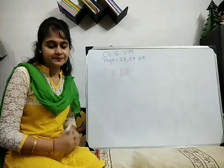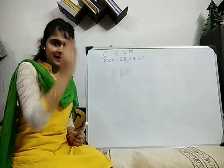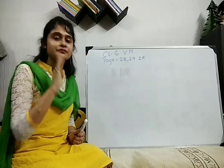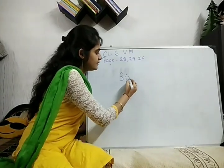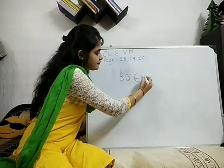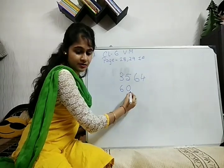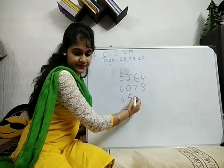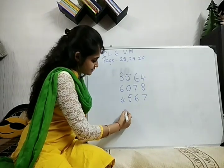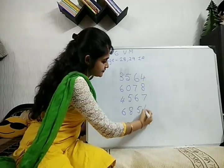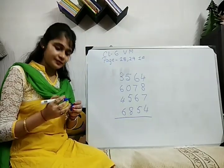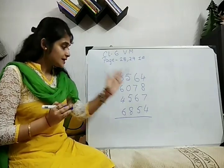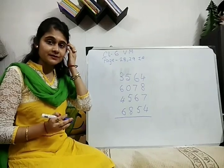Let's start. We will do the first question. Now you will see we have already completed 1 line, 2 lines, 3 lines. Now it is increasing — we will do 4 lines. So the first question is: 3, 5, 6, 4, 6, 0, 7, 8, 4, 5, 6, 7, 6, 8, 5, 4. Now in Vedic Math most of the sums are calculated from left to right, but we will start with right to left.